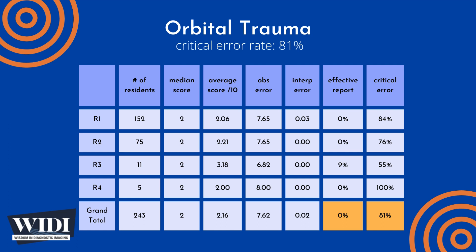We define a report having a critical error to be one with scores between 0 and 2 — in terms of letter grades, this would be an F or a D. In this most missed case, 81% of residents produced reports with critical errors.